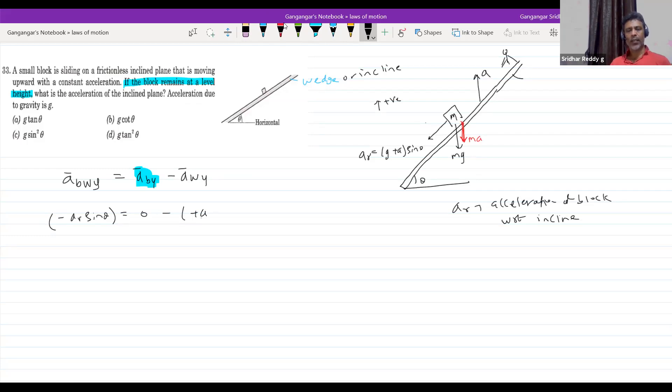This is the acceleration of the wedge, so this should be equal to how much? Plus a, we add them. What is the acceleration of the incline plane? That is what we are calculating.